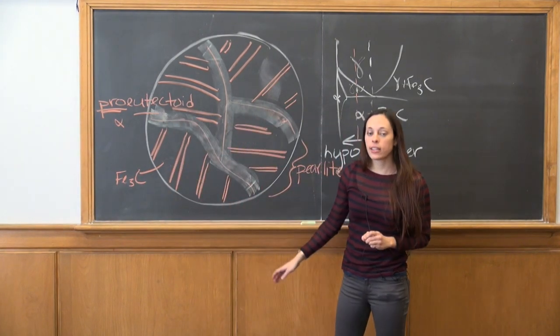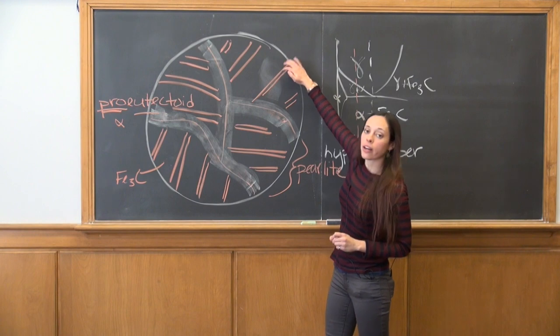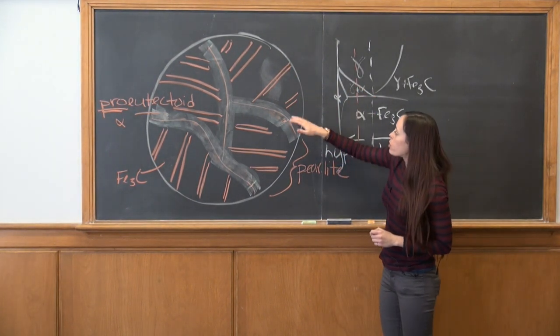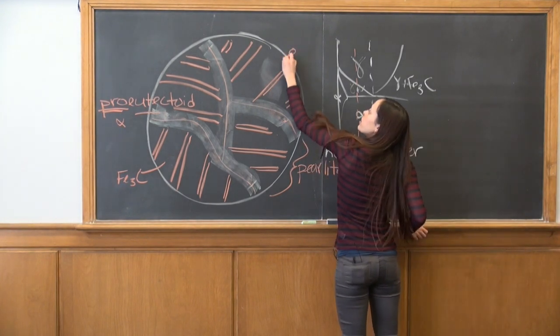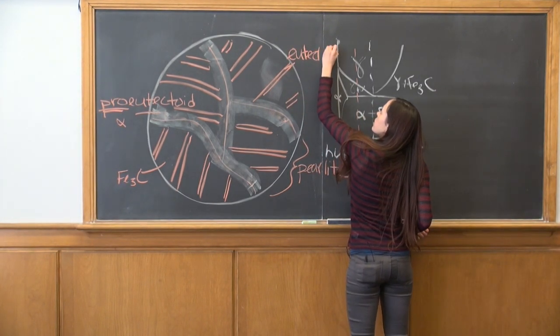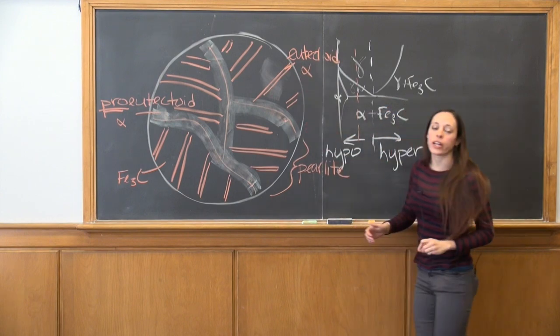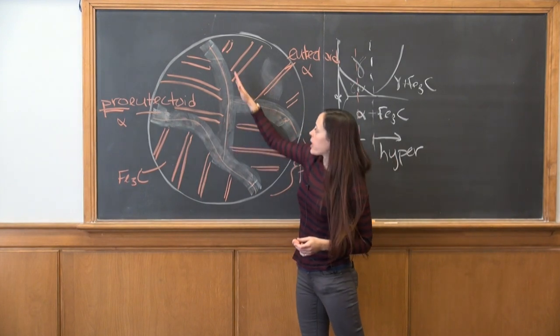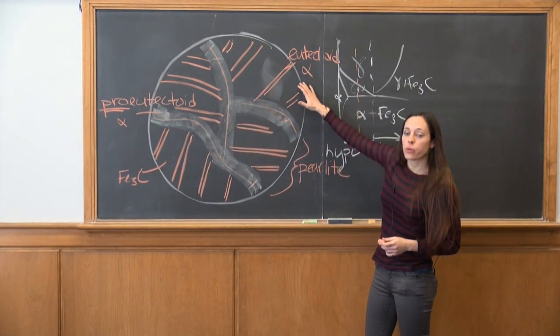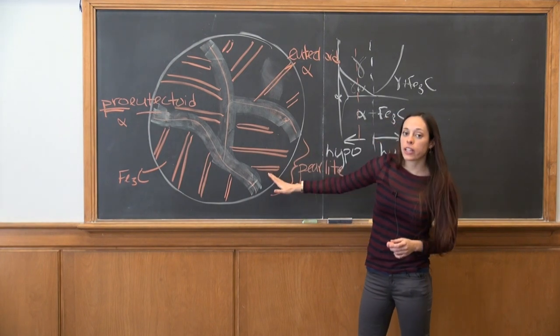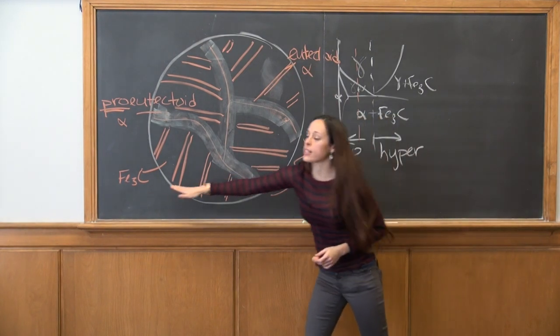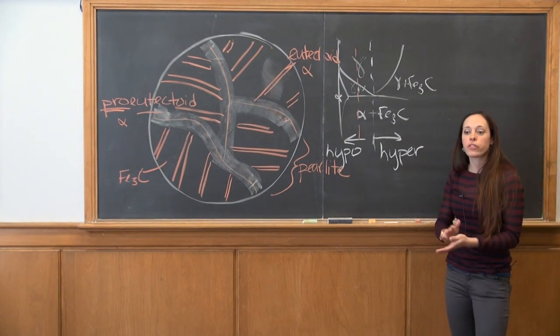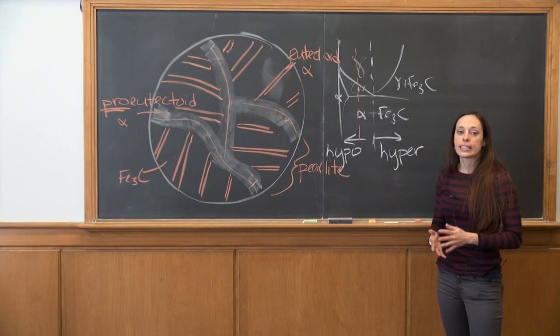So here's our cementite. And now the ferrite here has formed at the eutectoid composition, and so this is eutectoid ferrite. So our final structure has pro-eutectoid ferrite, and then in between the pro-eutectoid ferrite we have alternating layers of eutectoid ferrite and cementite that forms pearlite. And this is the generalized structure for the hypoeutectoid steel.